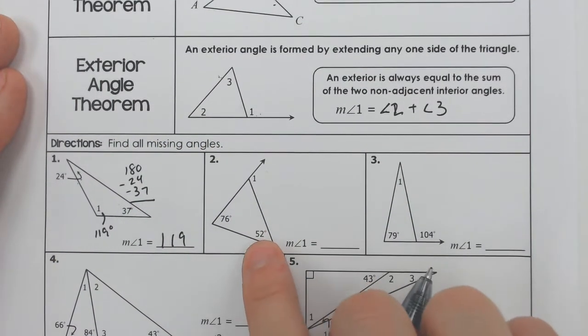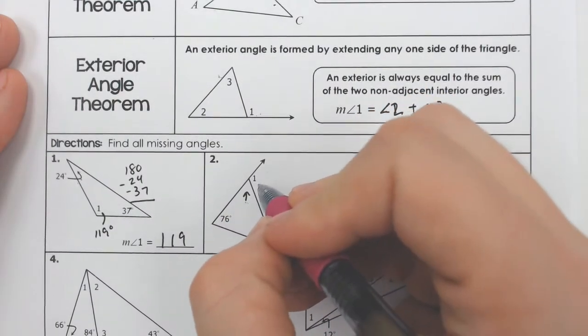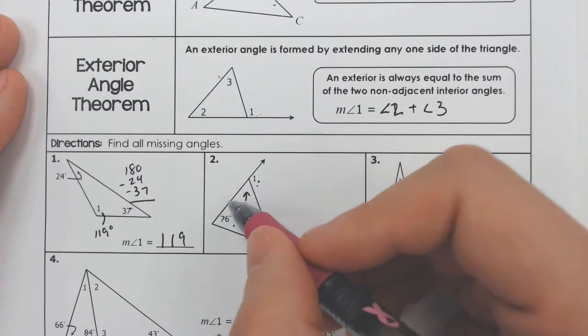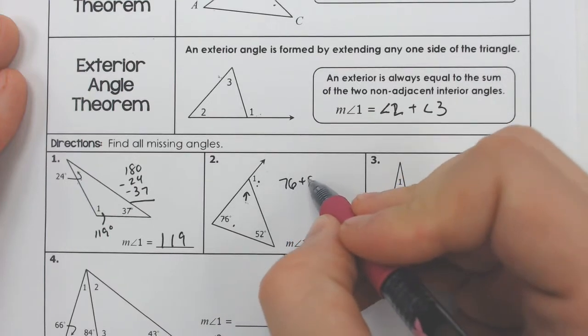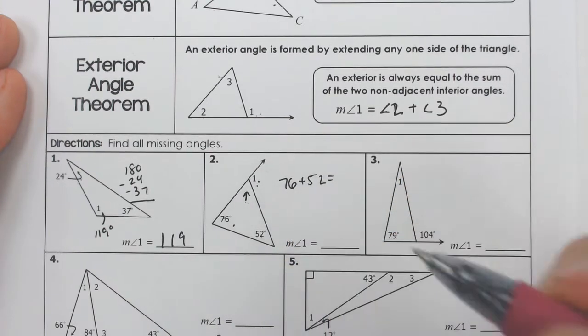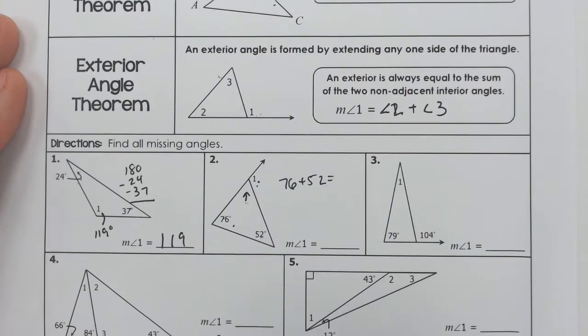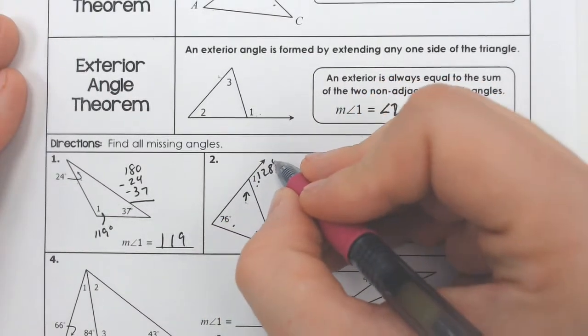Number two, on the other hand, this time we're not looking for the inside angle, the interior angle. We're looking for the exterior. So the two angles that are as far away from angle one on the inside, they will add to equal angle one. So we're going to add 76 and 52 together and we get 128. So that means angle one is 128 degrees.